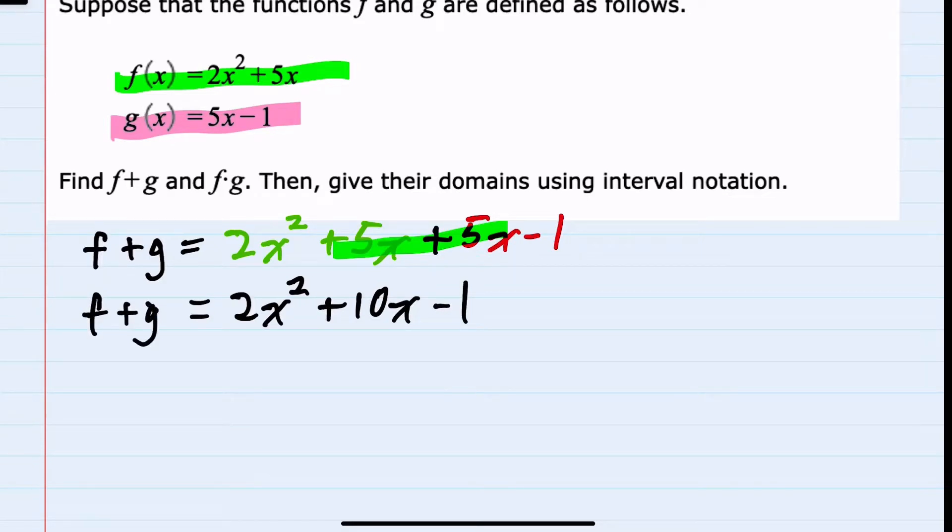Since we were also asked for the domain, looking at this function, there are no square roots that would limit what we could plug in. So for example, we wouldn't be able to plug in a negative into a square root function.